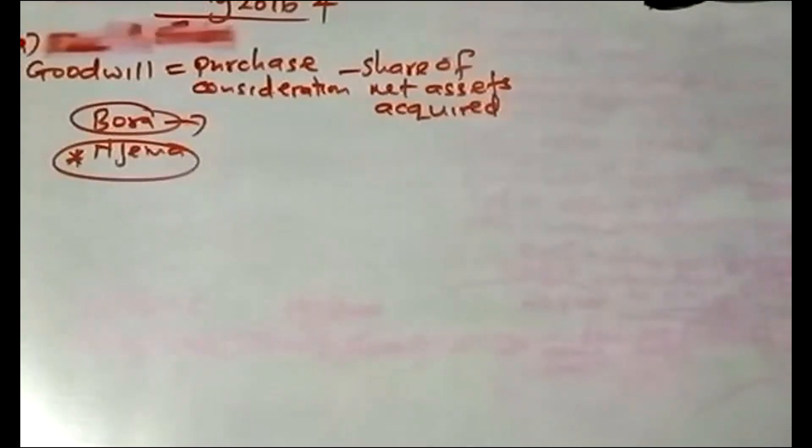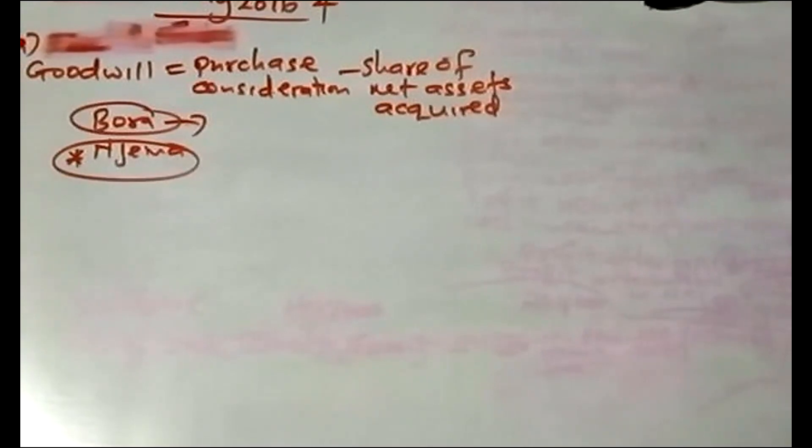For joint ventures, you don't have to think about which method to use, because the goodwill is just attributable to the parent. We are only concerned with the 50% which the parent controls in Njema, so there is no non-controlling interest in Njema. Under a subsidiary like BORA, which was acquired at 80%, there is a 20% non-controlling interest.